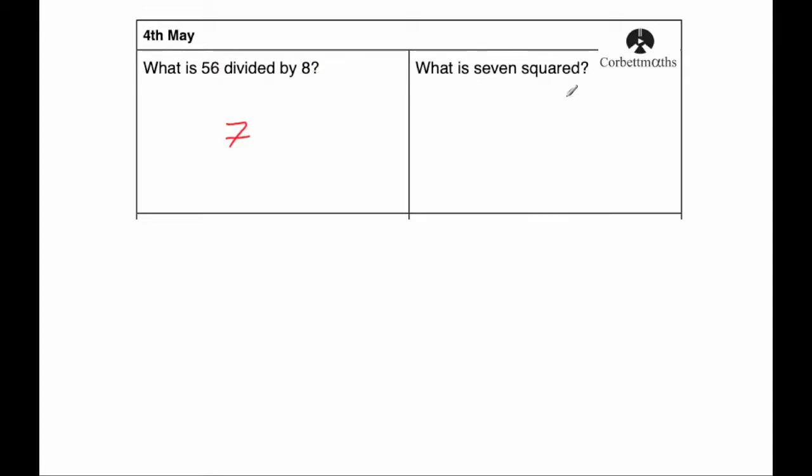The next question says what is 7 squared? So 7 squared means 7 times 7. And 7 times 7 is equal to 49.